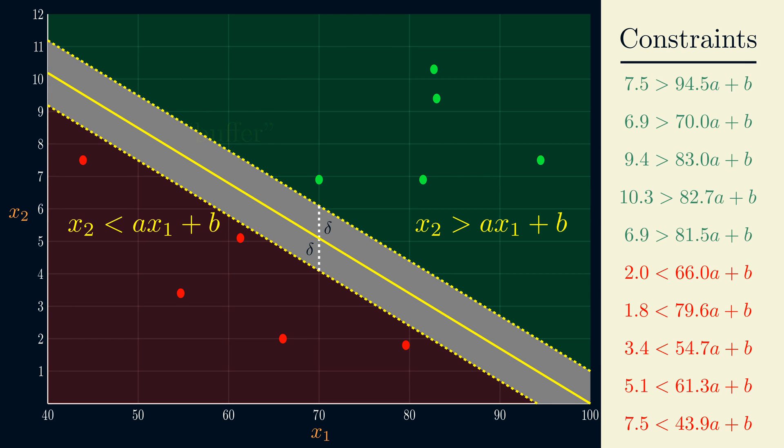One way of defining this buffer is to vertically shift our line up or down by some amount delta. So, the boundary of the buffer is marked by the original line shifted up and down by delta.